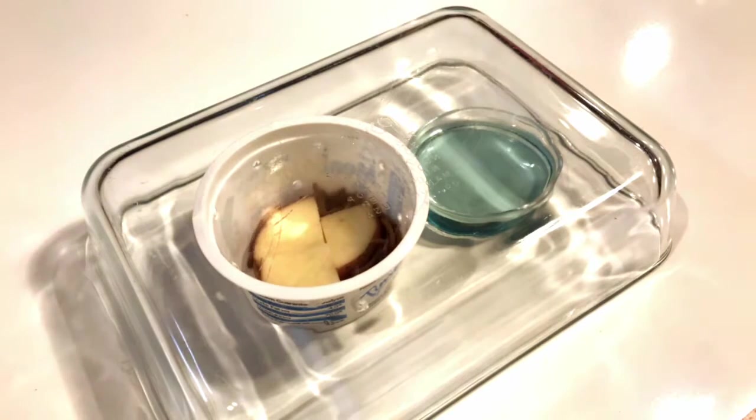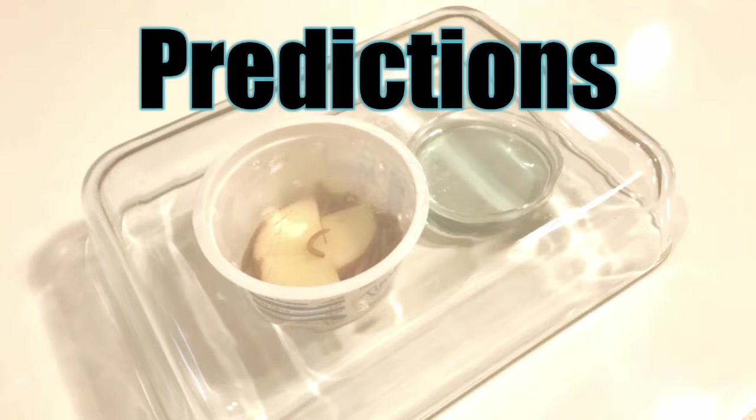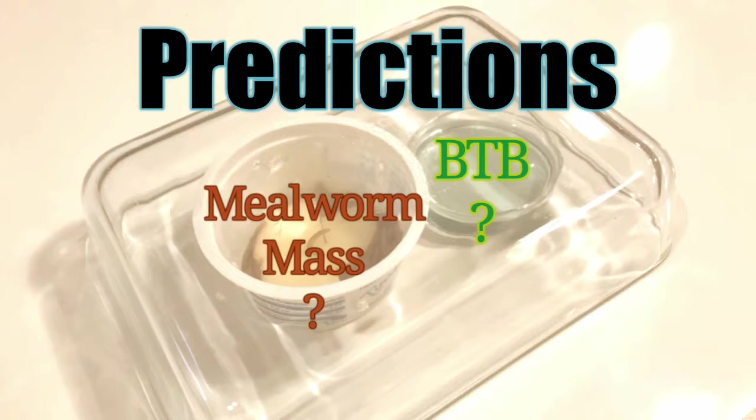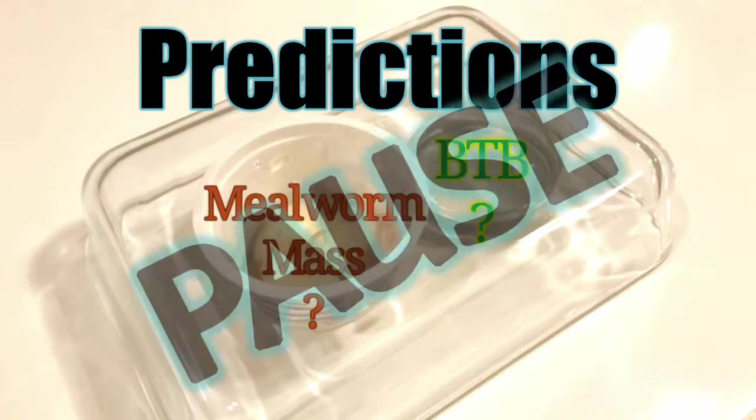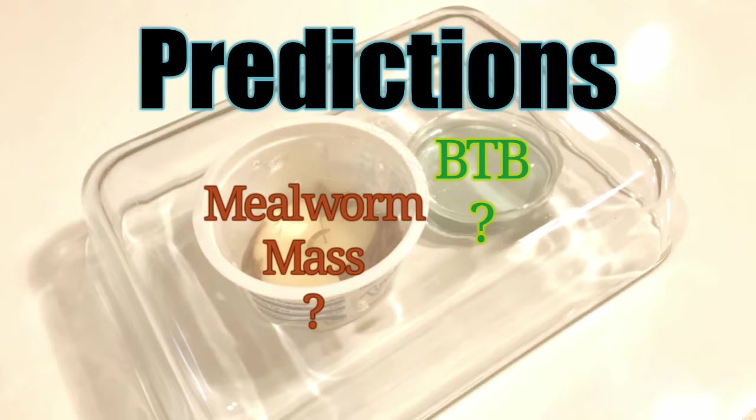So while the mealworms do their thing, let's take a moment to make some predictions. What do you think will happen to the BTB? Do you think it will turn blue, basic, yellow, acidic, or stay green, neutral? What about the mass of the mealworms? Do you think their mass will increase, decrease, or just stay the same? At this point, go ahead and pause the video and make some predictions about what you think we'll observe.